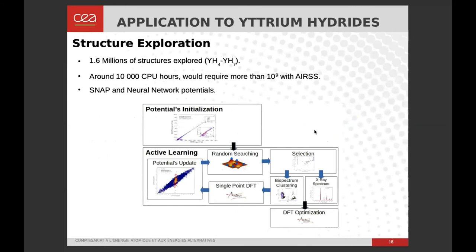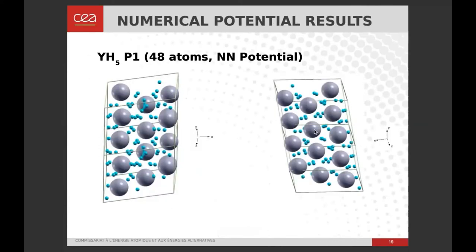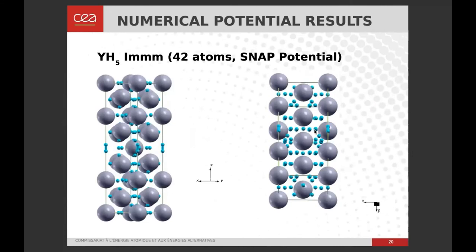Using this process, we explored 1.6 billion structures of binary yttrium superhydrides, requiring around 10,000 CPU hours. The same number of structures would have required around 1 billion CPU hours with DFT. We also found new structures unreachable with ab initio random structure searching due to their complexity — like one having 48 atoms in its primitive cell, and another having 42 atoms with a tetragonal symmetry. These structures are closer to the experimental X-ray spectrum, though they still do not fully explain the experimental spectrum, unfortunately.